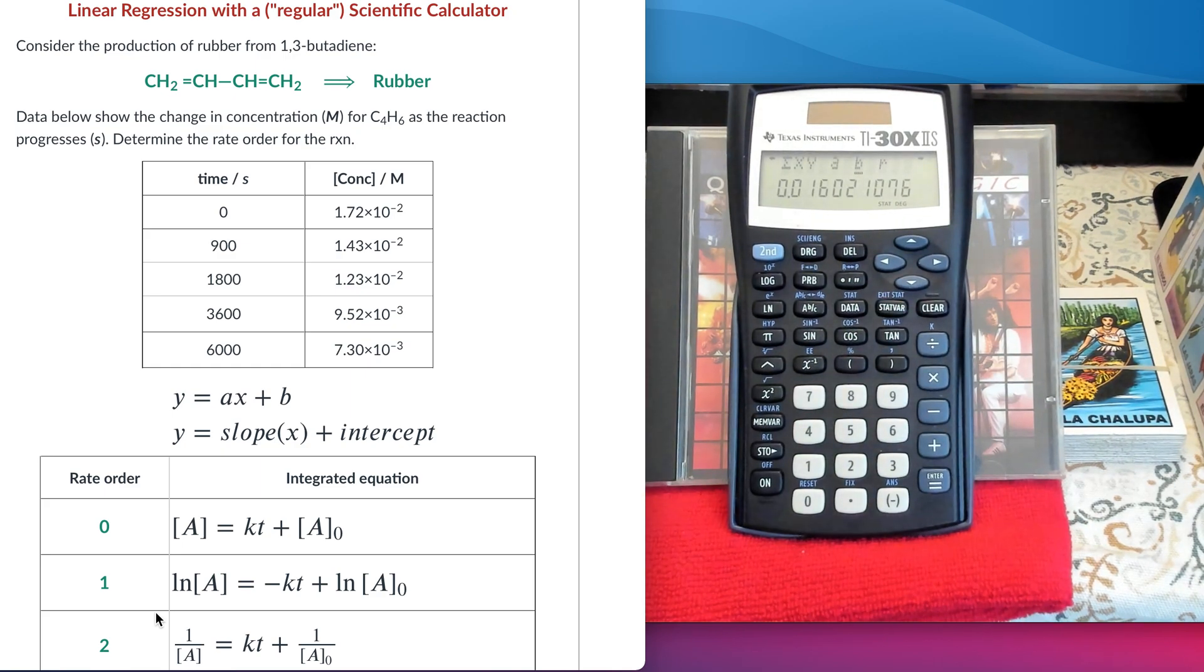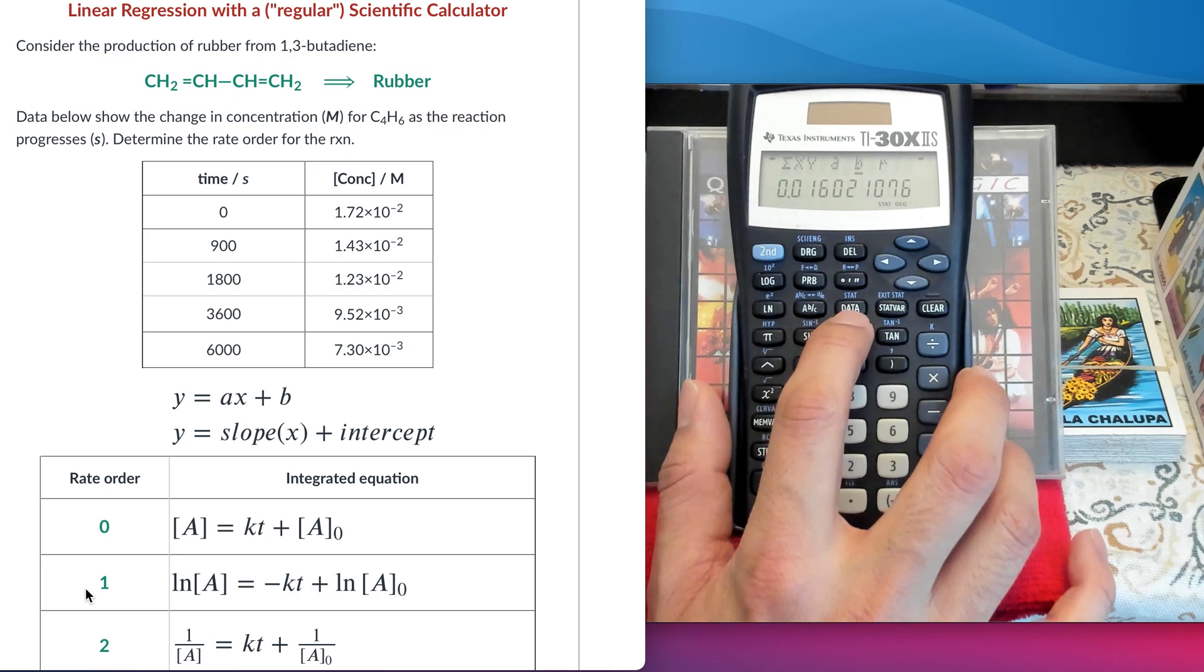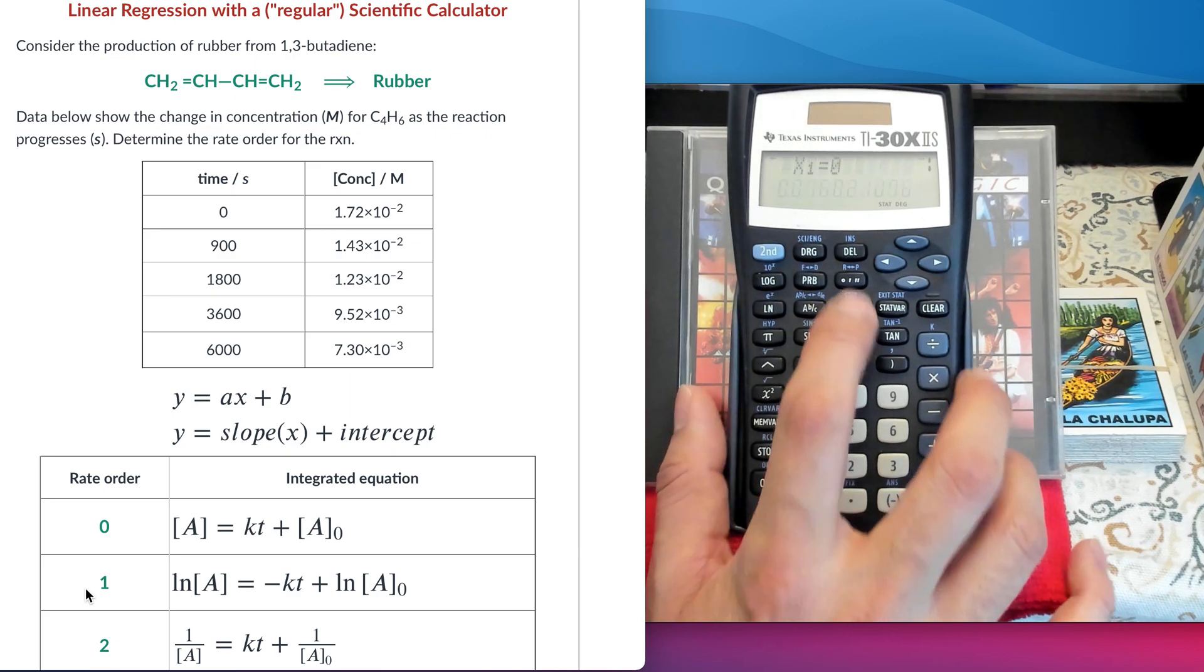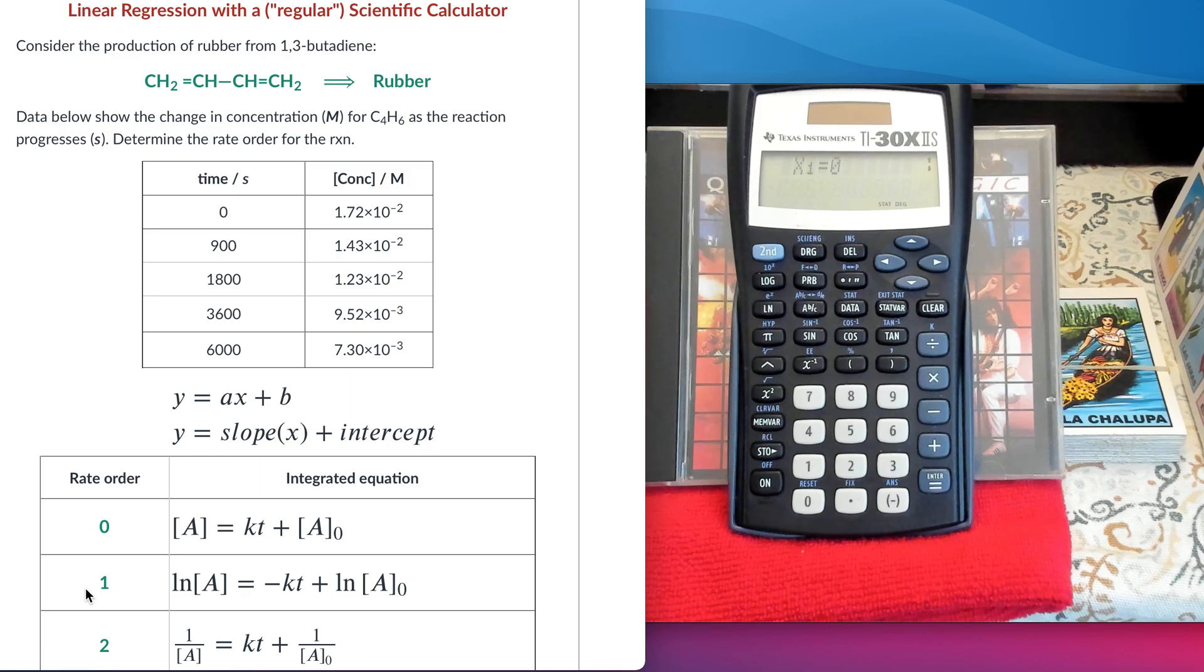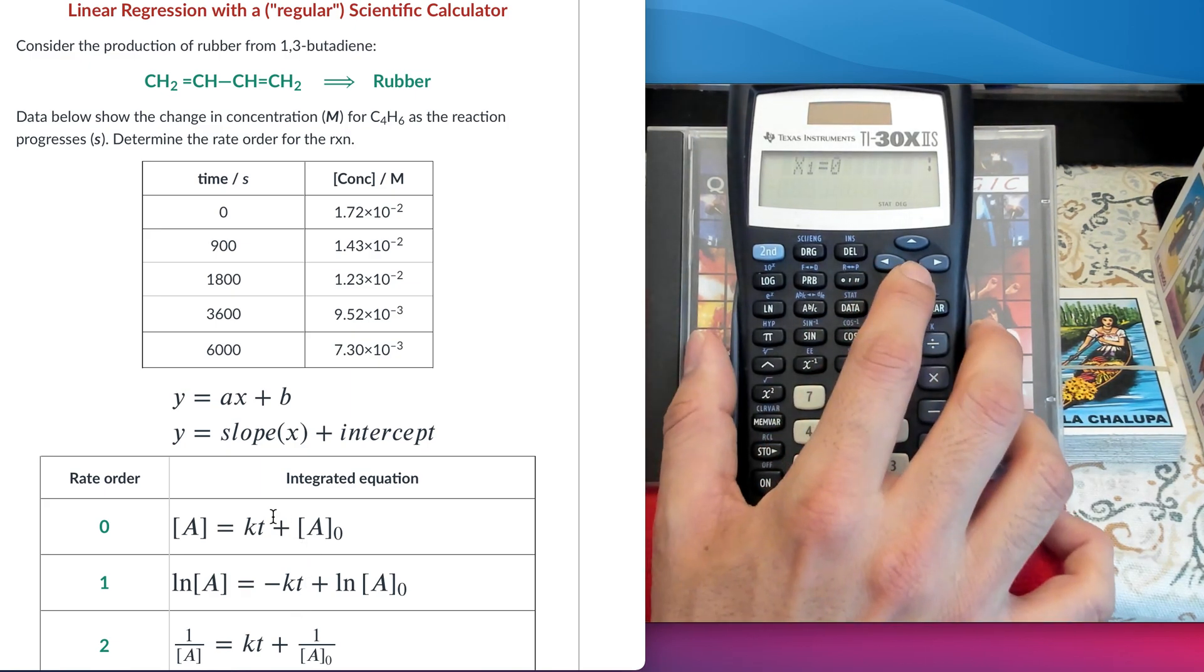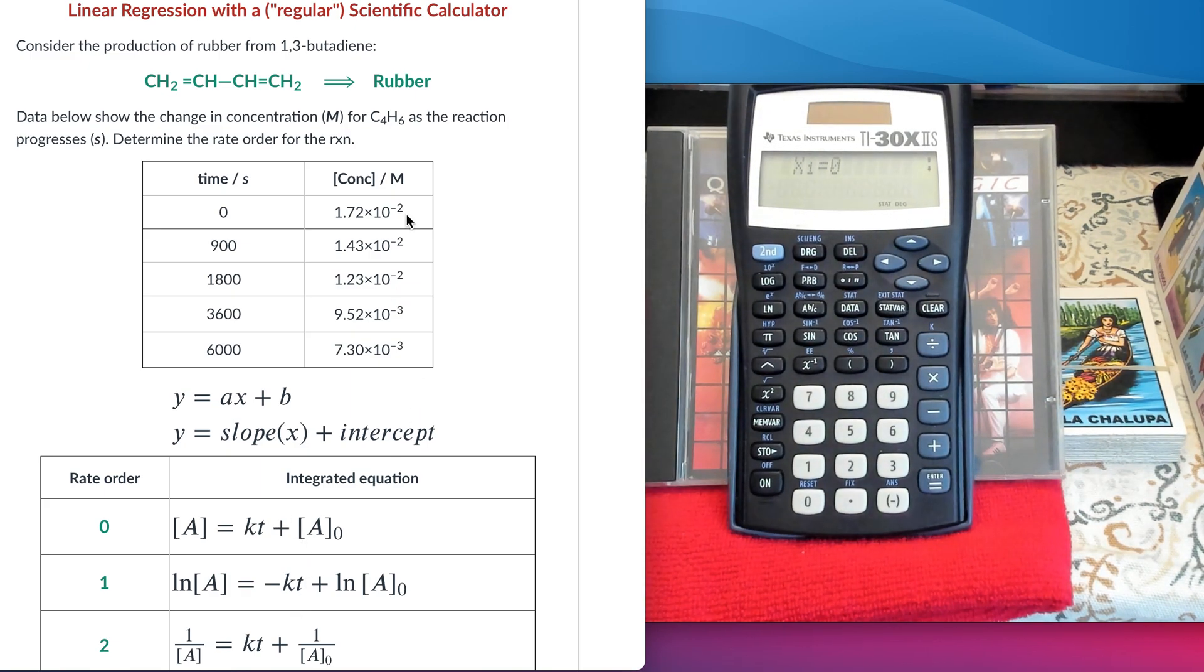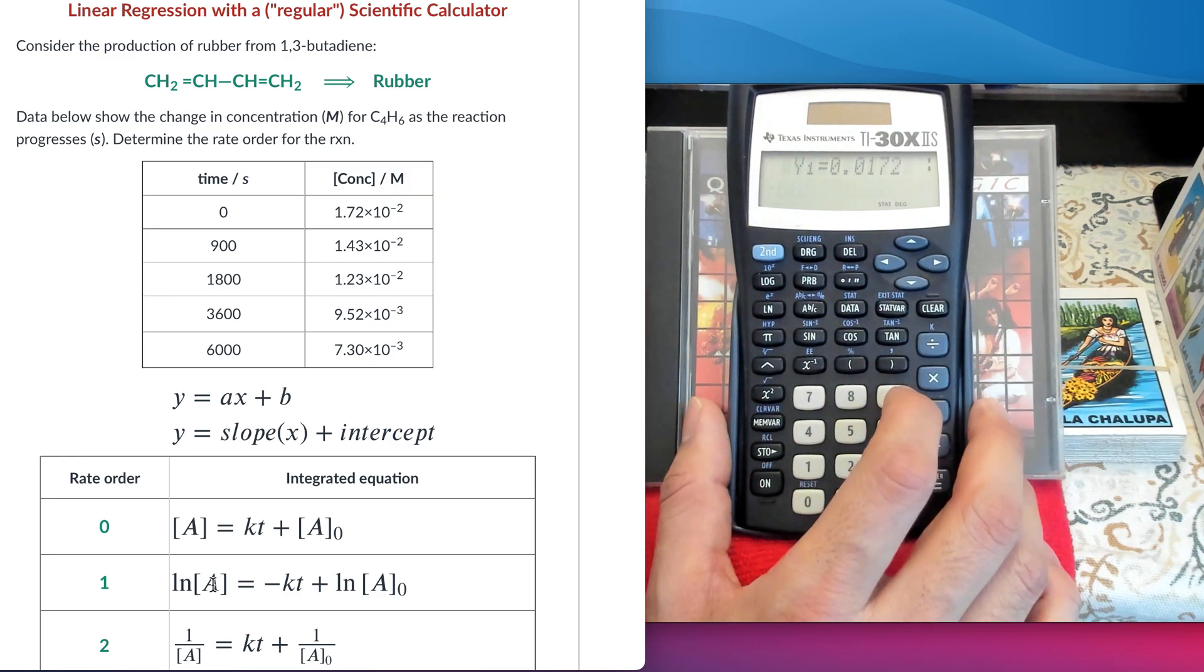Next one, I have to enter the model of the linear equation for the integrated rate law for first order. Let's go back to data here. Now it's asking me the X and Y values again. X, it's already there. These are not changing. In every single case, the time is still there. What I need to change is the values that I have to enter for the concentration, because in the model of the first order it's not the concentration, but the natural log of the concentration. So, I have to change all of those values.